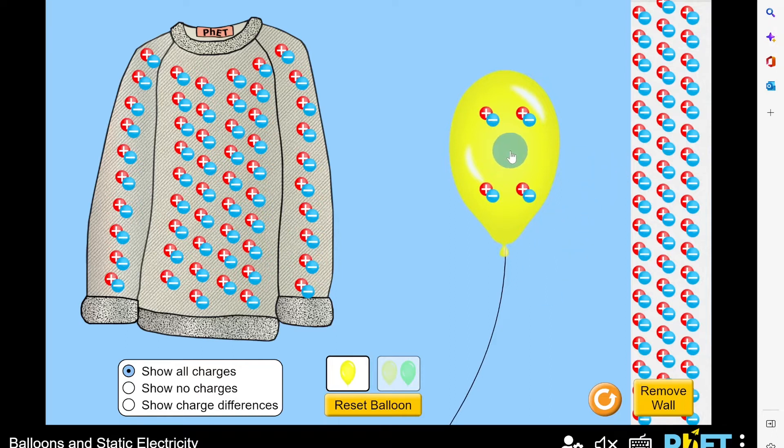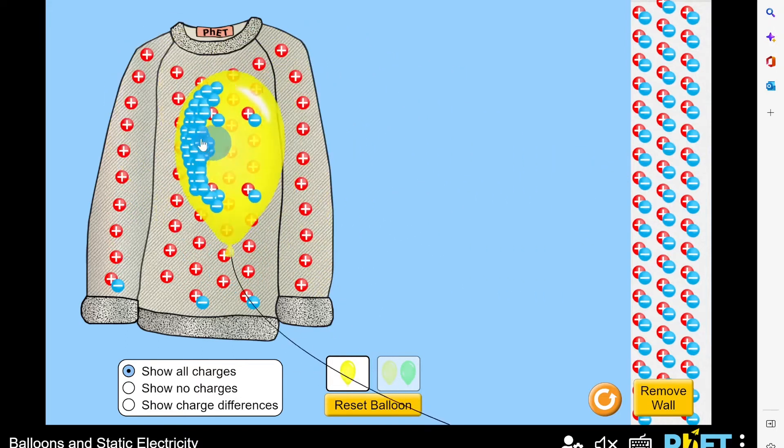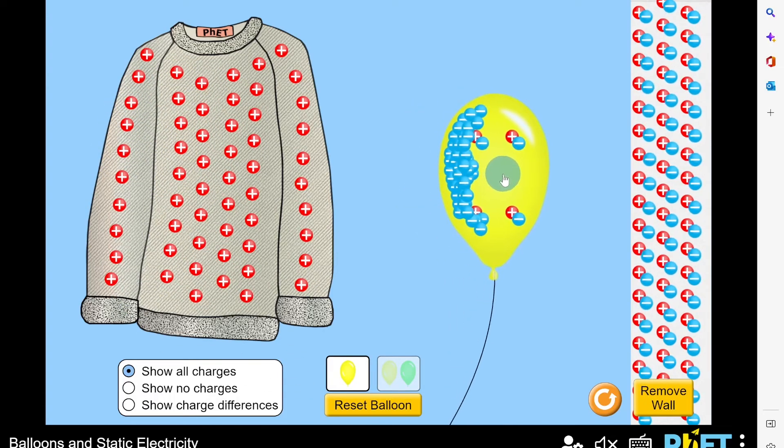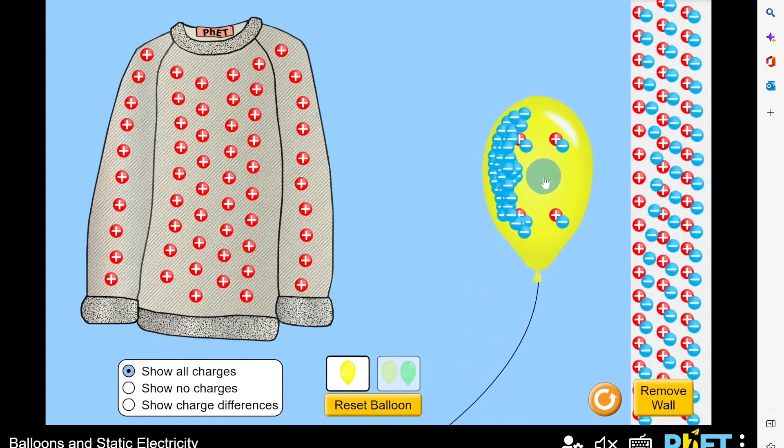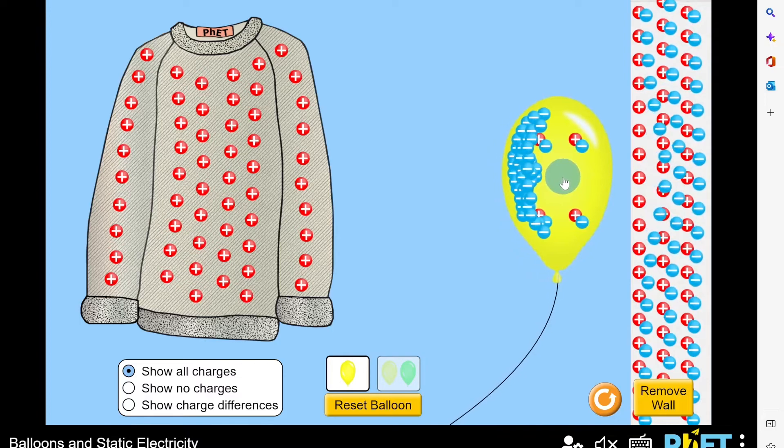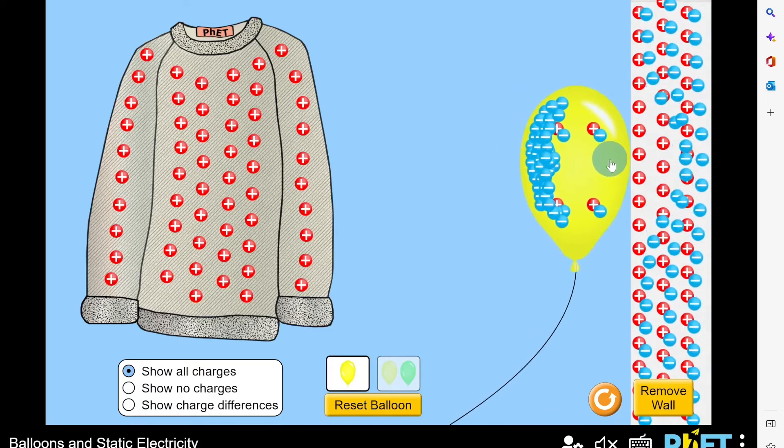Whereas if I go back to my jumper and build up a negative charge on the balloon again, then if I bring it close to the wall this time, you'll see that the negative charge is actually pushed away from the negative charge in the balloon. And that's because like charges will repel each other. So the negative charge in the balloon is repelling the negative charge in the wall away.